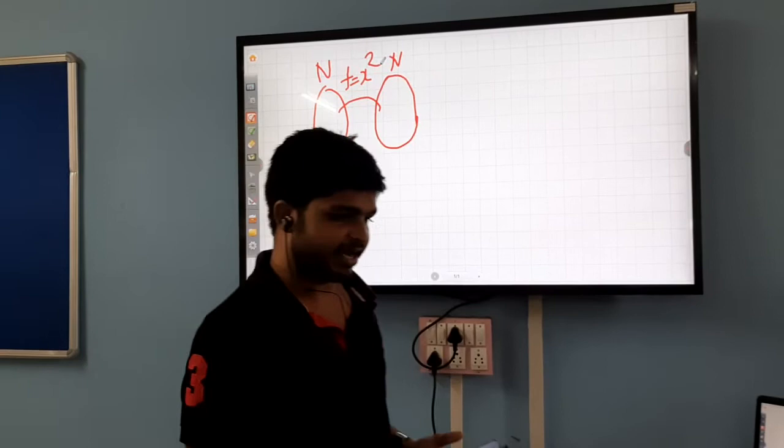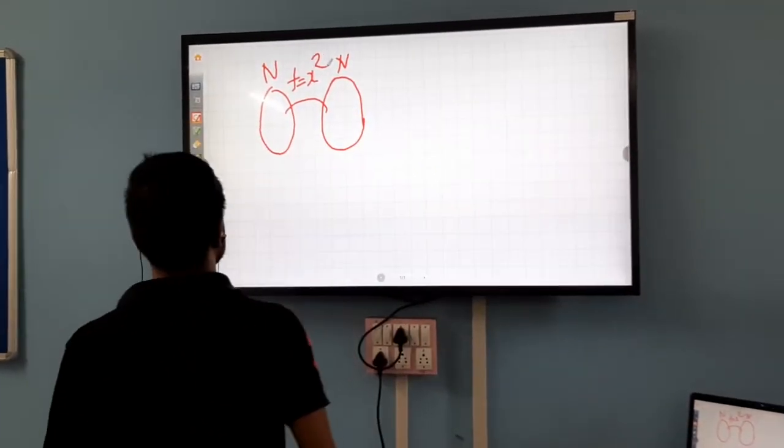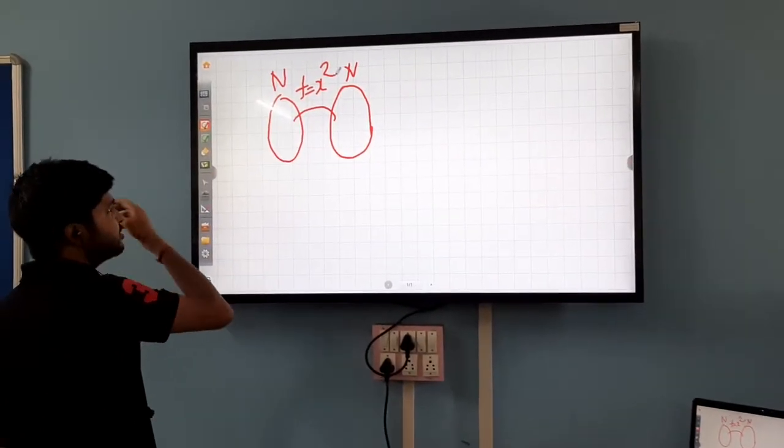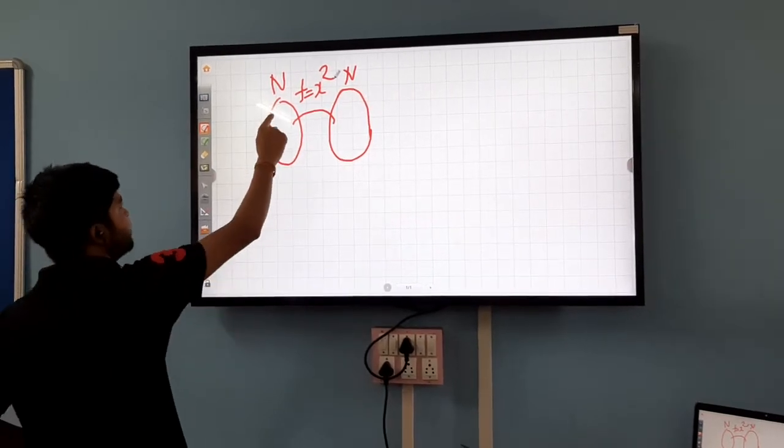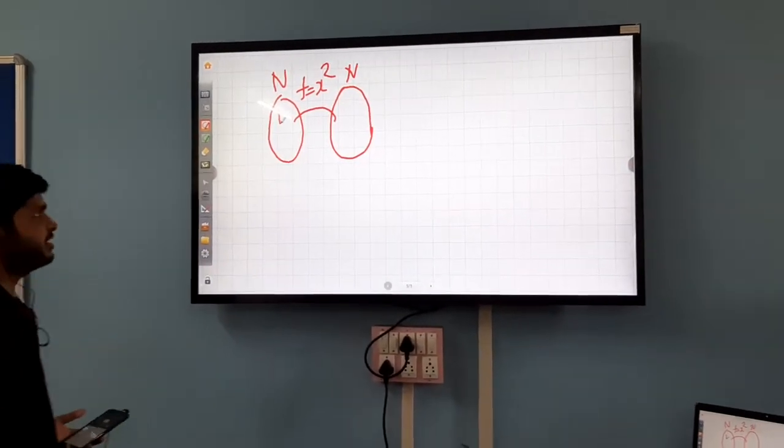Now, let us know whether the function is one-to-one or onto. So, first of all, we draw a picture.